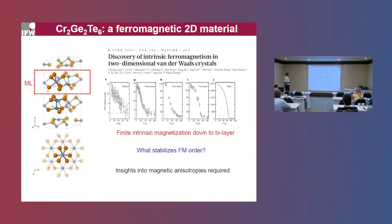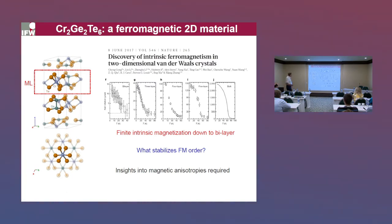Now let's come to the particular material: chromium germanium telluride. As with many other van der Waals systems, it presents a very typical structure. The chromium ion is six-fold coordinated by tellurium ligands and they form a honeycomb lattice in the AB plane. These honeycomb planes are stacked along the C direction and coupled only very weakly by van der Waals forces.